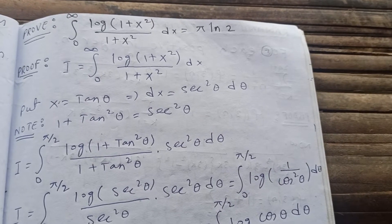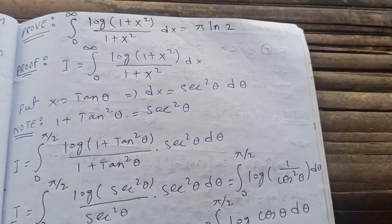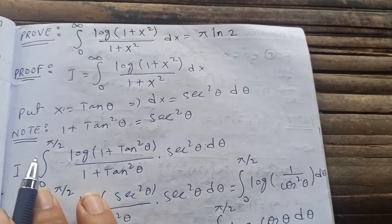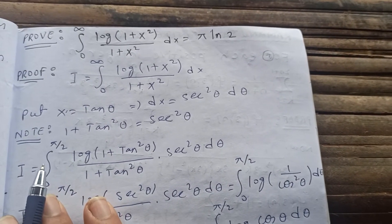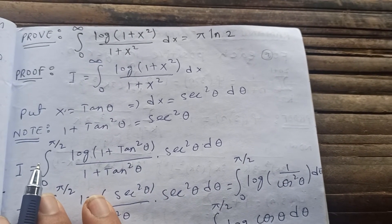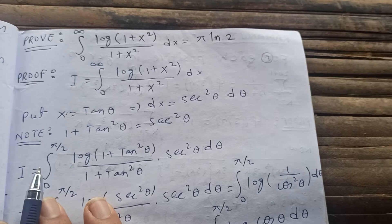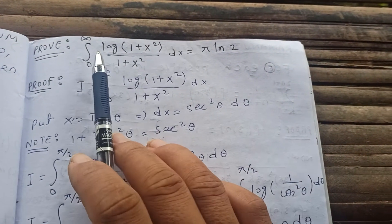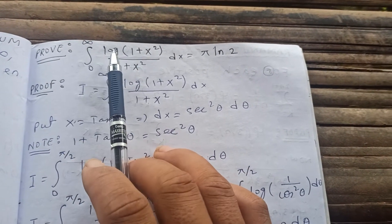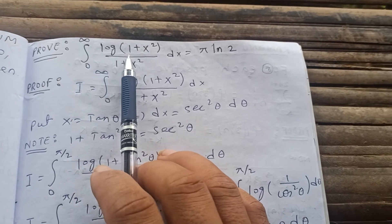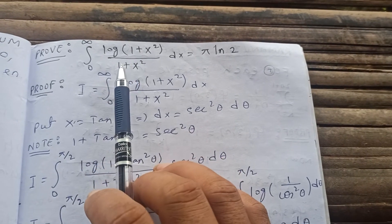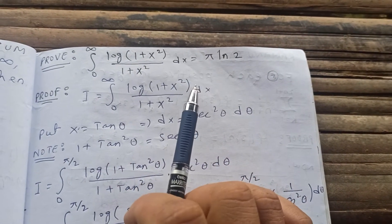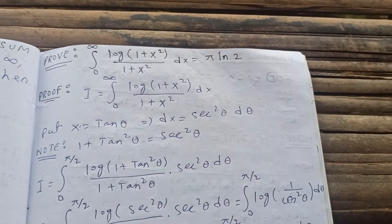Hello guys, welcome back to my channel. Today we are going to see another logarithmic integral — a class of logarithm integrals. We are going to prove that the integral from 0 to infinity of log(1 + x²) / (1 + x²) dx equals π times natural log of 2.